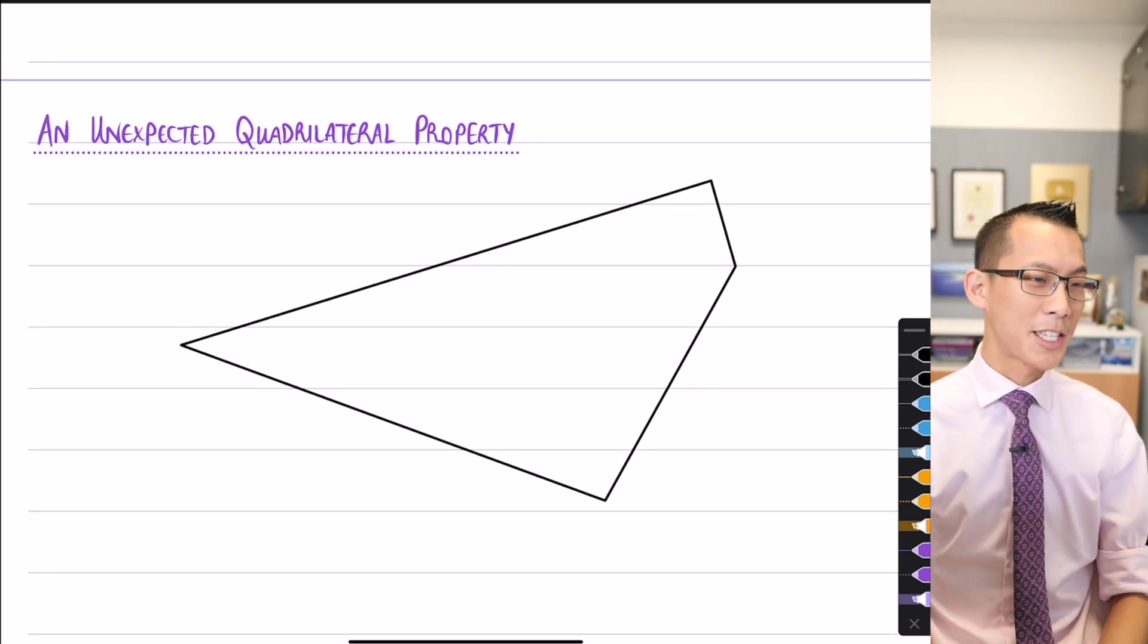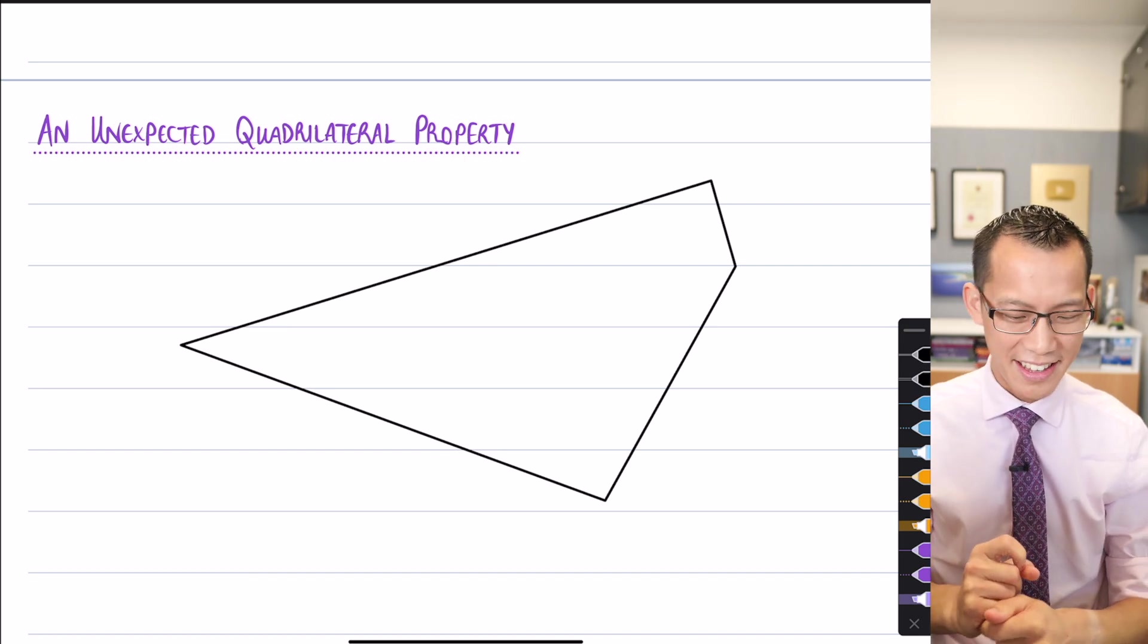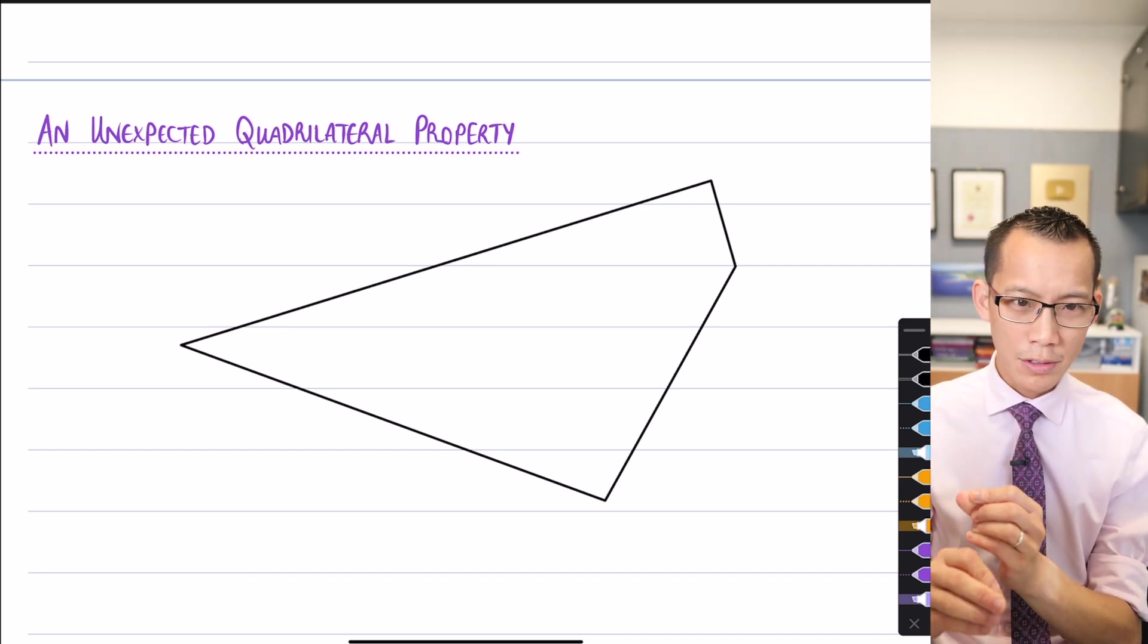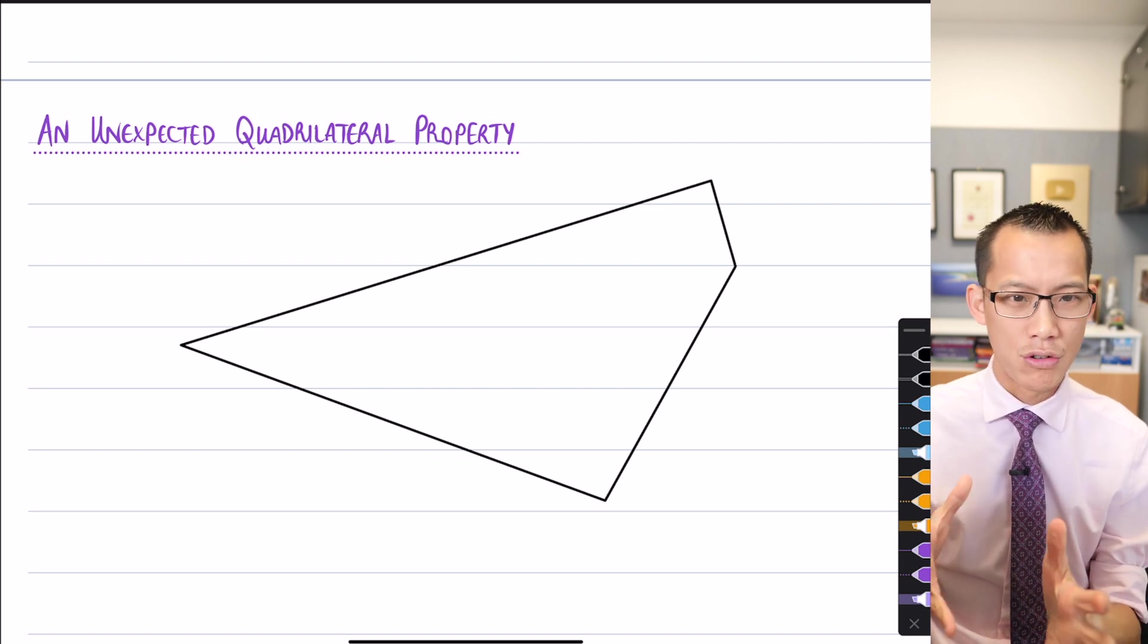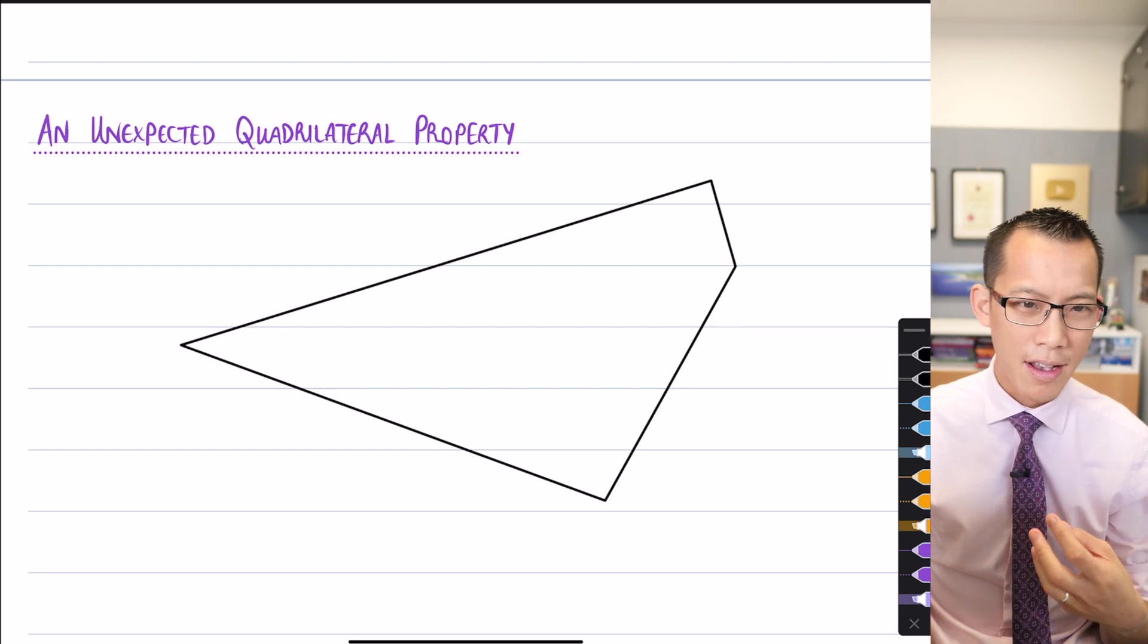Underneath this heading, which is an unexpected quadrilateral property, what I'd like you to do, this is actually harder than it sounds, I want you to draw for me a quadrilateral that is not a special quadrilateral. So I don't want a parallelogram, I don't want a square, I don't want a kite.